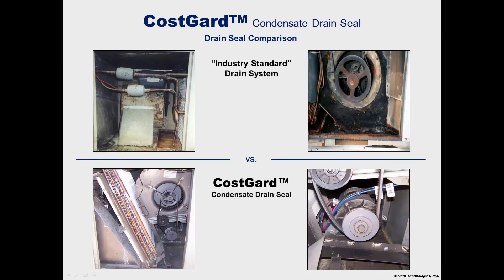These photographs compare the internal conditions of air handlers with and without the Cost Guard condensate drain seal. The differences are clear. The top photographs with the industry standard drain system were in operation for less than 10 years — failed condensate drain systems led to these wet and dirty conditions, building damage, and poor indoor air quality. In contrast, the bottom photographs show units that use the Cost Guard condensate drain seal operating for more than 13 years with no preventive maintenance. As you can see, the units are clean and dry inside, offering the owner many years of extended service.